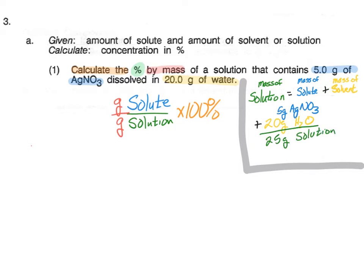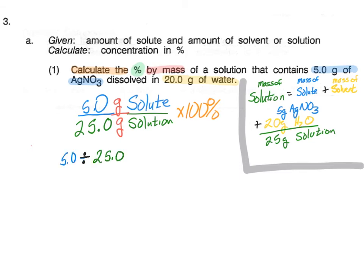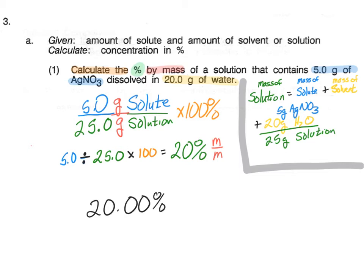We put the 5 grams of AgNO₃ on top as the solute, and 25 grams of solution on the bottom. Then we put 5 divided by 25 times 100 into the calculator — note: don't hit both the percent key and 100 or it will multiply twice. Our answer is 20%, and we write it with the units as 20.00% M over M, since we're always asked for two decimal places.